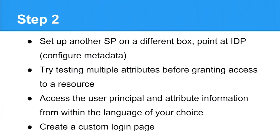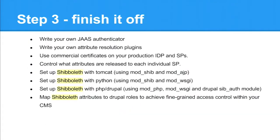Try testing multiple attributes before granting access to a resource. In the context of Les Mills Asia Pacific, you might want to nail down resources to someone with a trainer profile. Accessing user principal and attribute information works from the language of your choice - we've used it successfully with Java, Python, and PHP. Create a custom login page too, because the default login pages that the identity provider has look quite ugly - you have to customise login.jsp. The error pages also look quite ugly by default, so you want to give them a facelift.